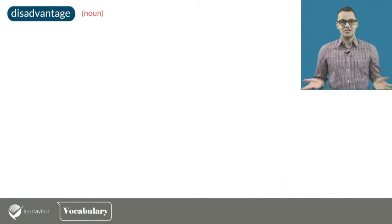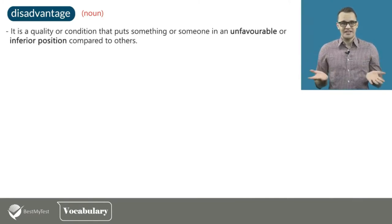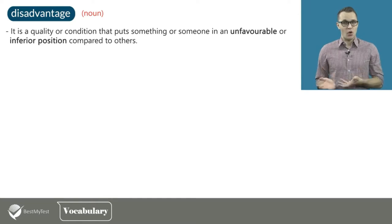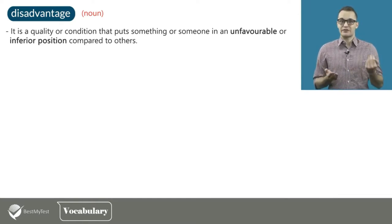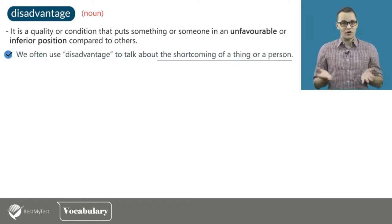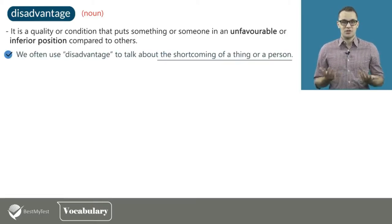The definition of the noun disadvantage reads as follows. A disadvantage is a quality or condition that puts something or someone in an unfavorable or inferior position compared to others. We often use disadvantage to talk about the shortcoming of a thing or person.